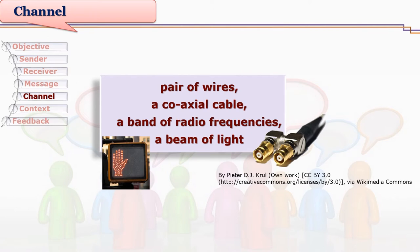Sometimes, when talking about mass communication or distance communication, we require electronic media — pair of vials, coaxial cables, a band of radio frequencies, or a beam of light. All these become channels. We listen to radio programs and receive communication through cables, television, internet, and computers — everything works as channels. A simple beam of light helps us get signals, and the entire signal system worldwide plays a major role in traffic management.